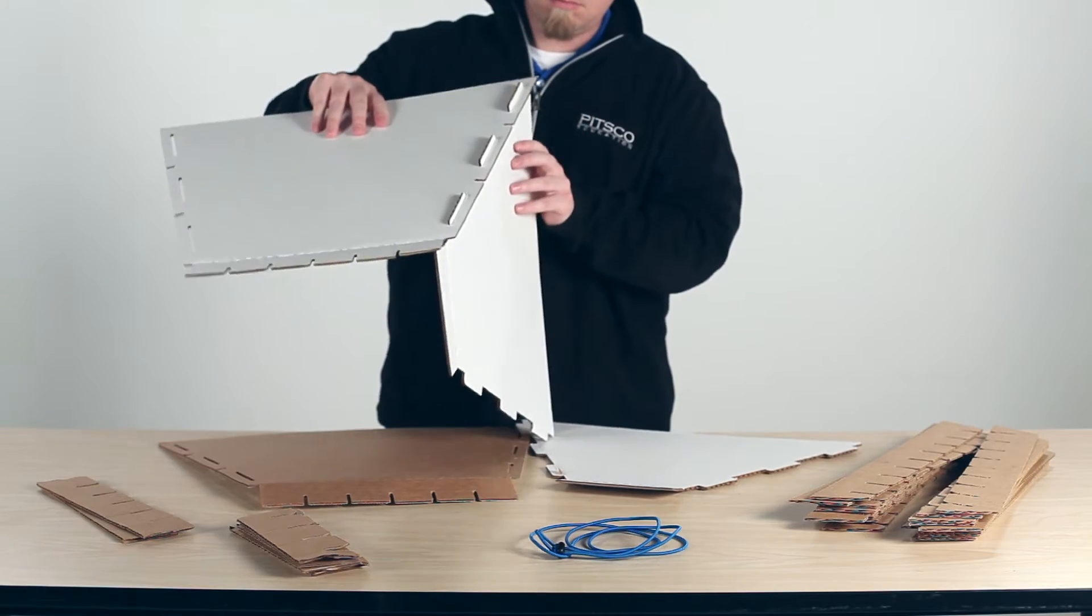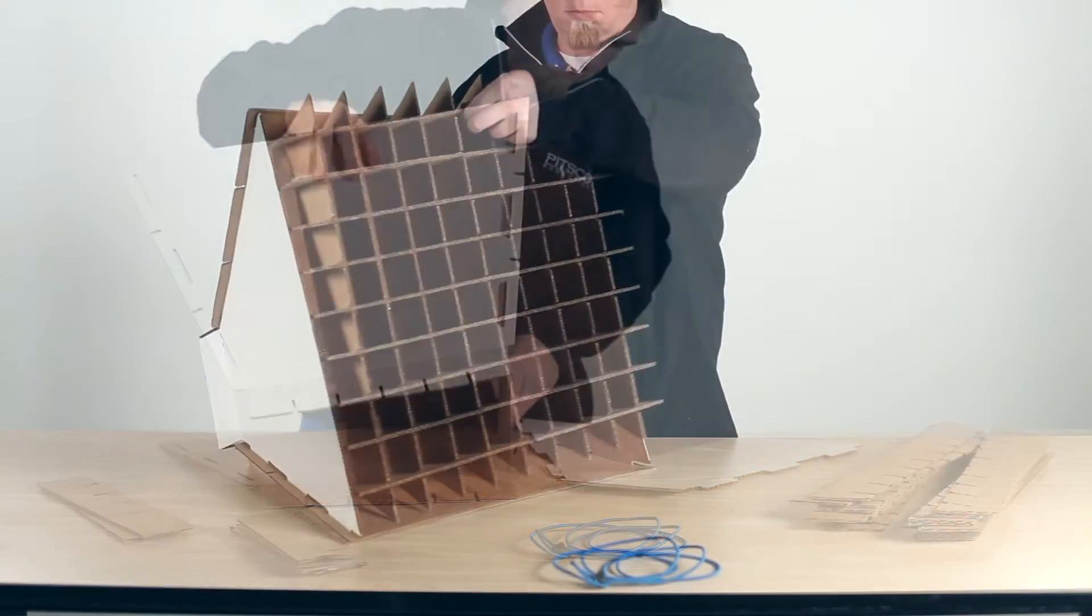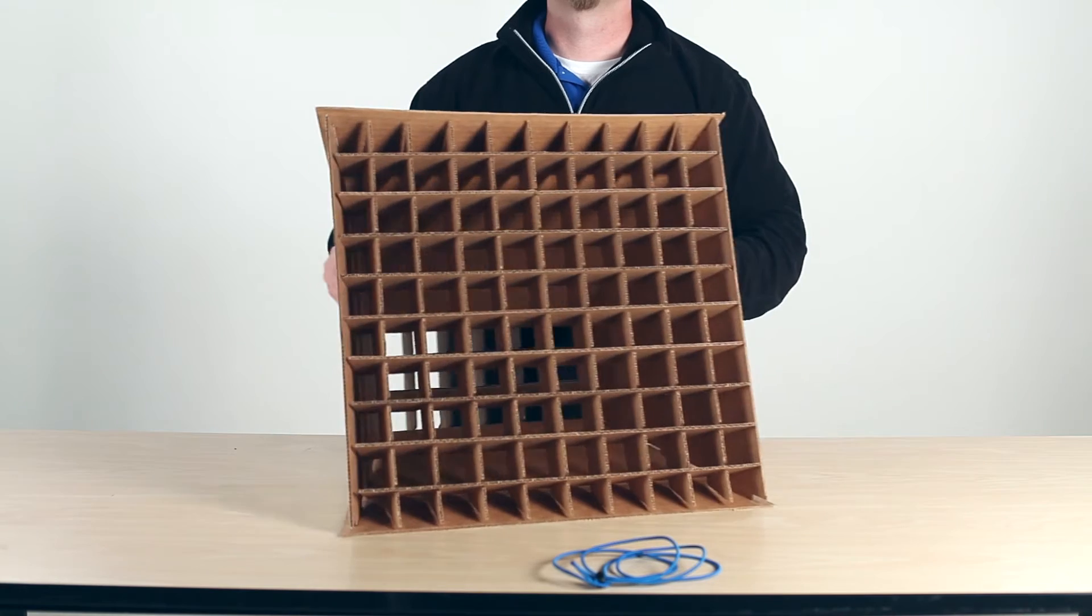Students simply use cardboard and cool melt glue to construct a grid and funnel that easily attaches to the average box fan.